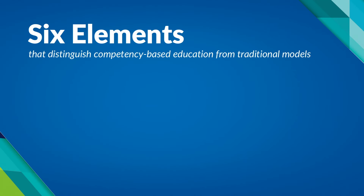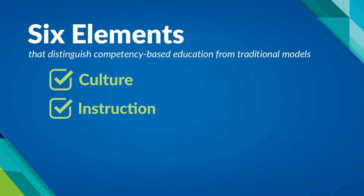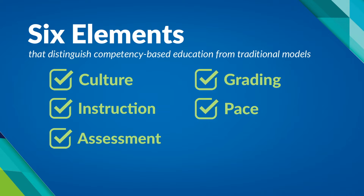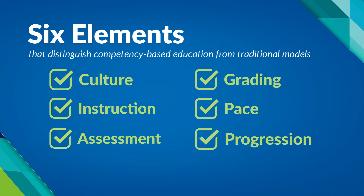In order to better understand what competency-based education actually is, there are really six elements we can use to compare it to traditional or structure-process type education. Those six elements include culture, instruction, assessment, grading, pace, and progression. Let's talk about culture first.